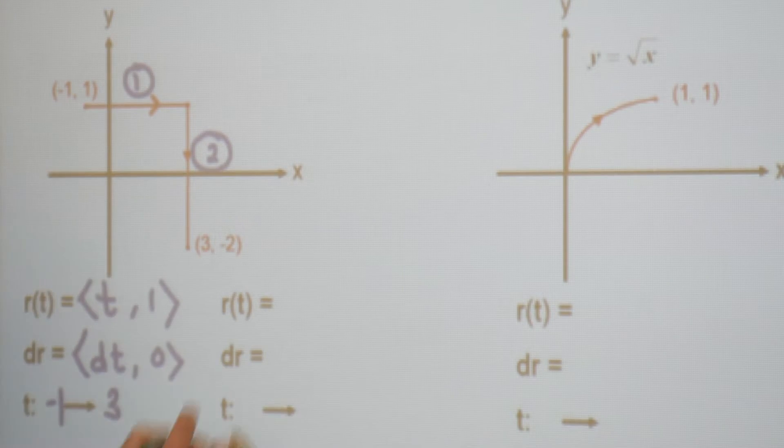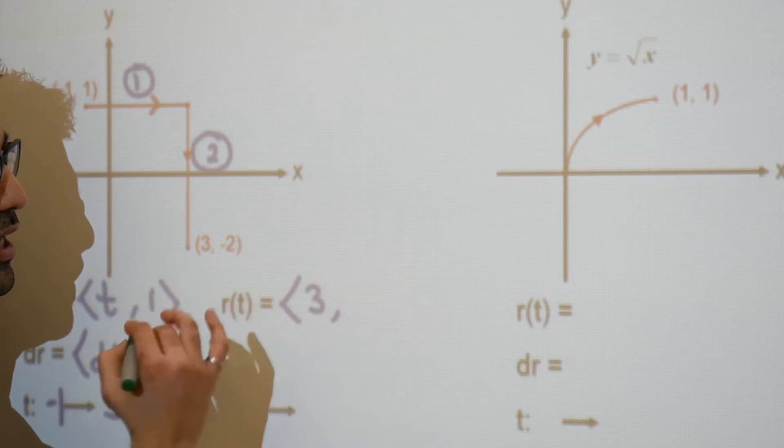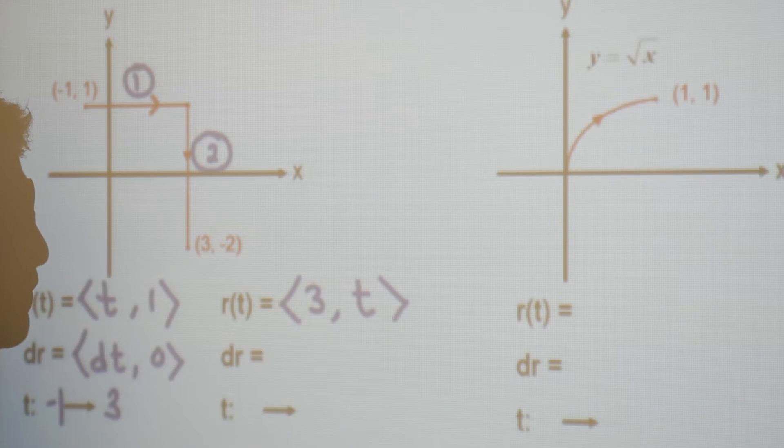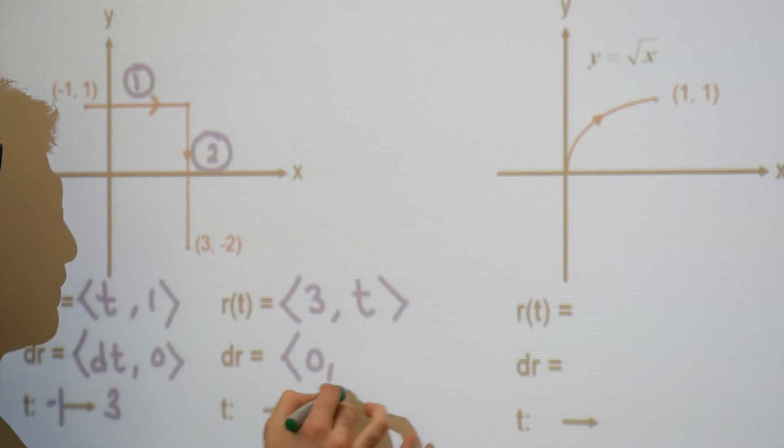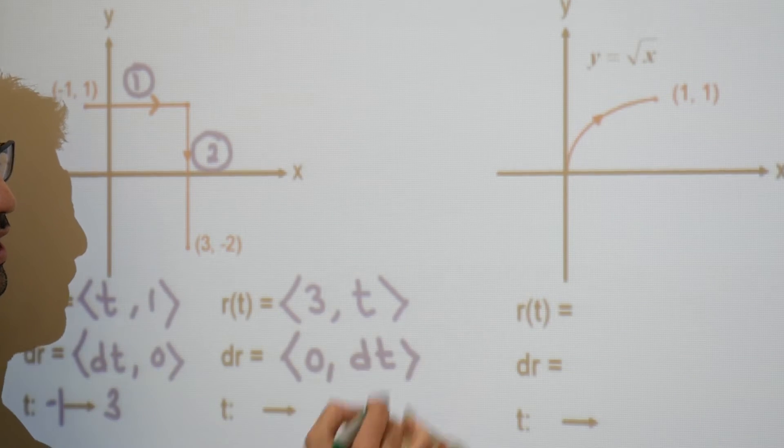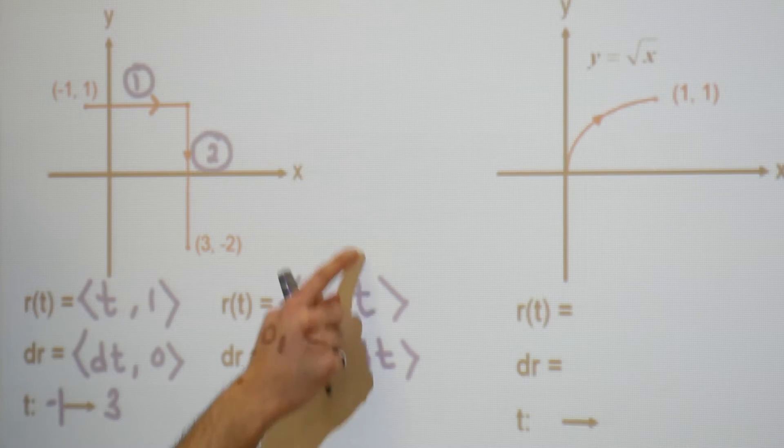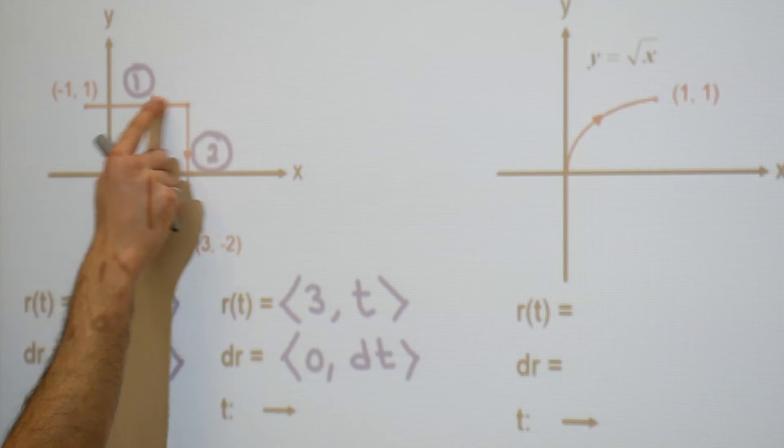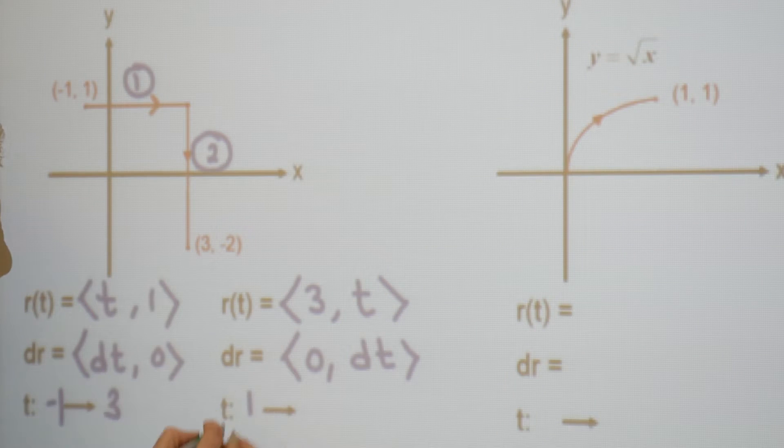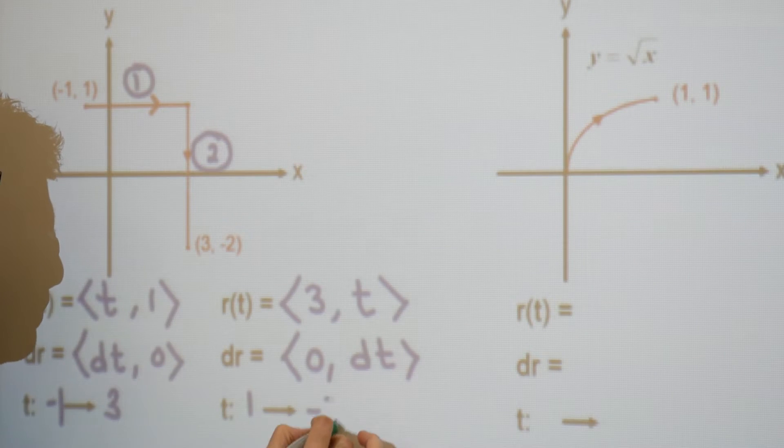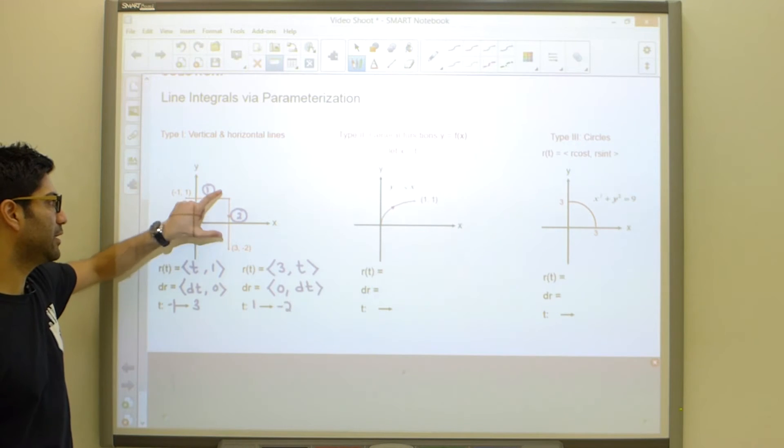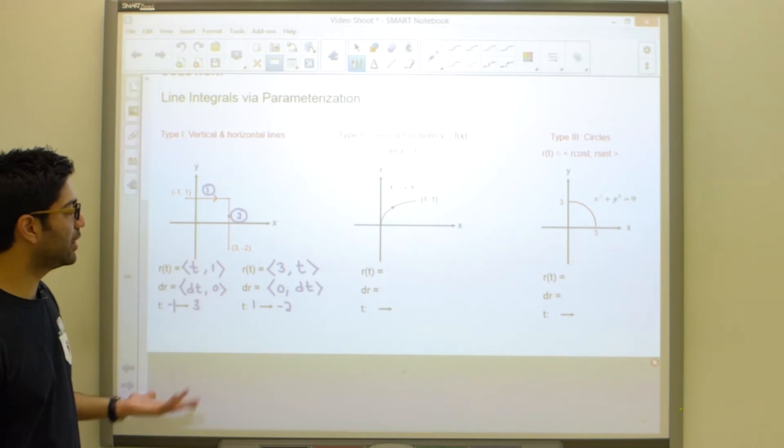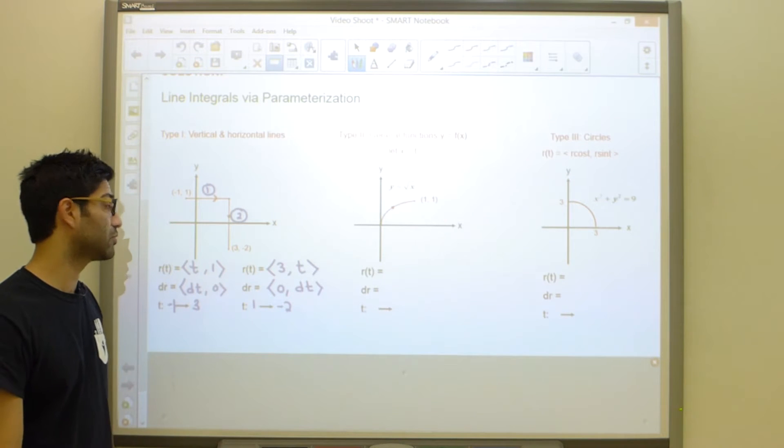Moving on to vertical lines, this time around, you're going to realize that your x value stays constant at three, and your y value is the one that changes. So this is how you would begin that parameterization. Taking the derivative as our second step gives us zero and dt. And this time, remember your parameter t rather represents your y value. So where does y go from as you move from here to here? And so y starts off at a value of one and ends up at a value of negative two. Okay, so as you move from a to b, you're looking at the beginning and end y values this time. This is fairly straightforward. With this, you should be able to parameterize any horizontal or any vertical line.